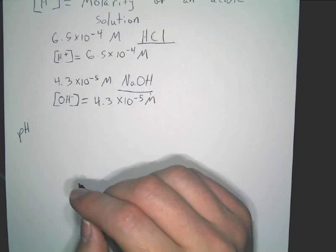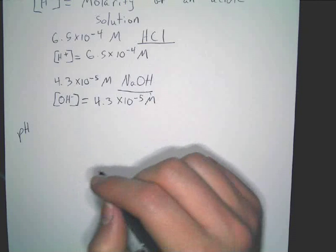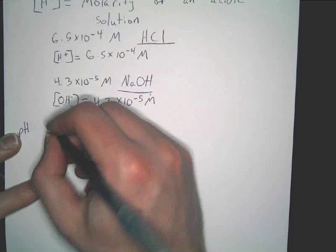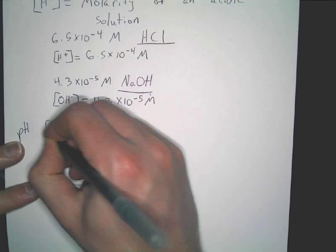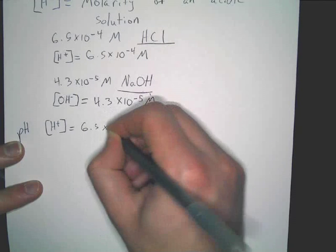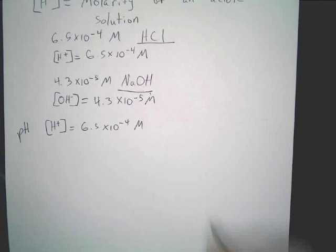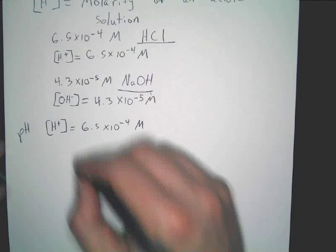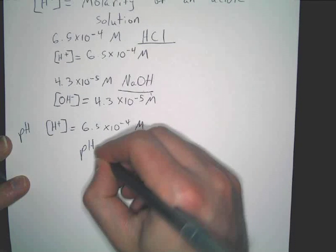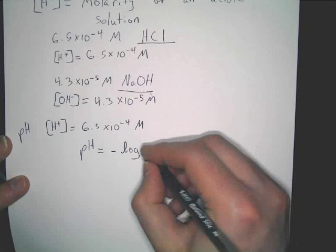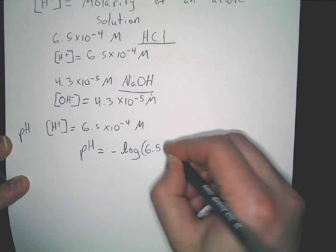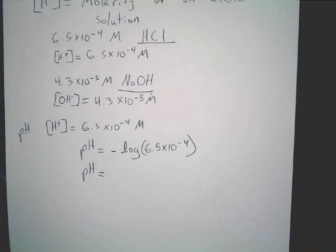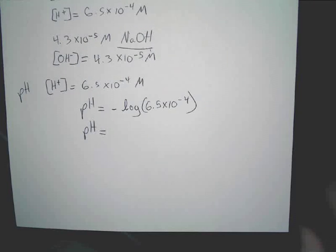pH is found using the H+ of something. So, let's take this solution right here. We've established that our H+ concentration is equal to 6.5 times 10 to the negative 4th. All you do to find the pH of a solution is very simple. All you do is this. You literally type in negative log into your calculator. Then you type in the number. That will give you your answer. That's it. That's all you do.